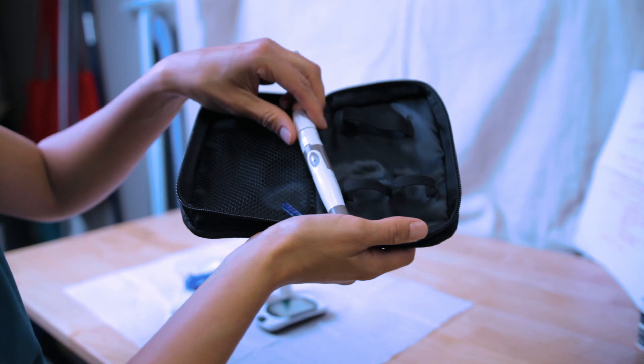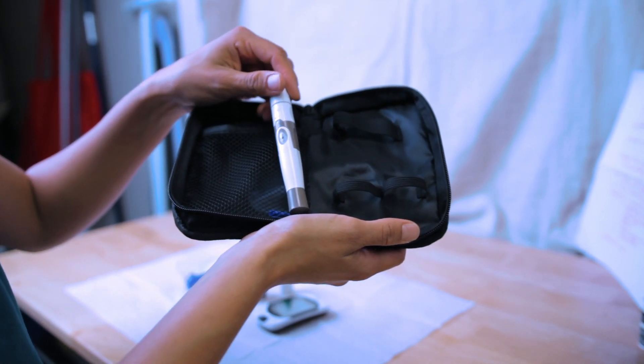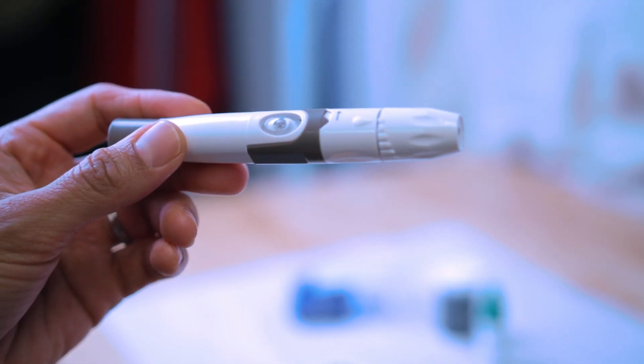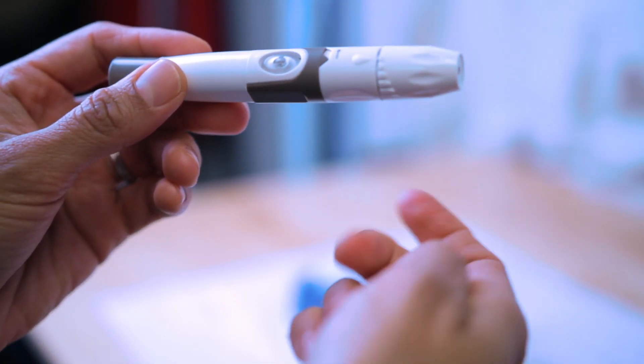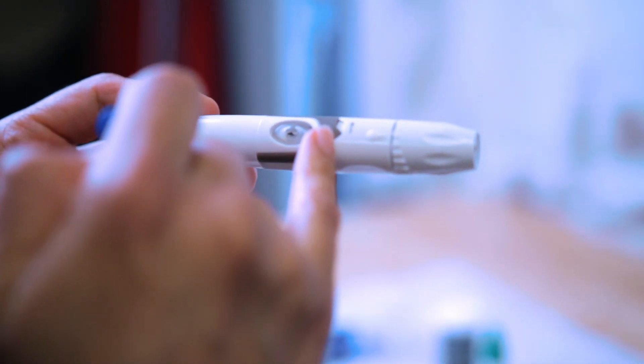they're sterile. Then you have your lancing pen, which we're going to prime and get ready to go. So starting with the lancing device, you want to put the lancet in. In order to do that, it's in lock mode, so that little arrow